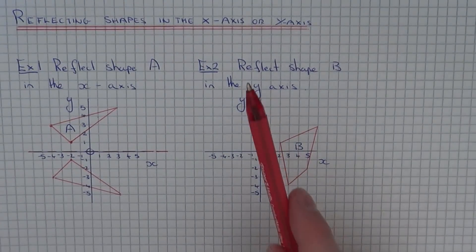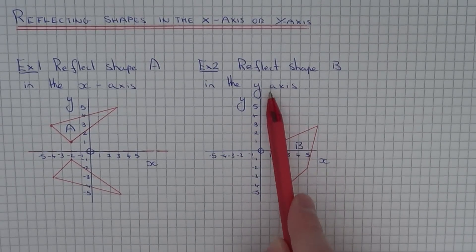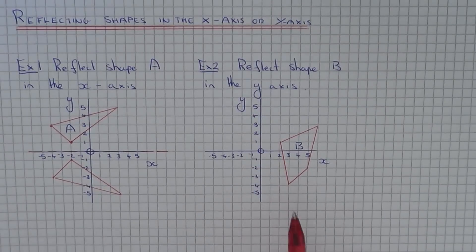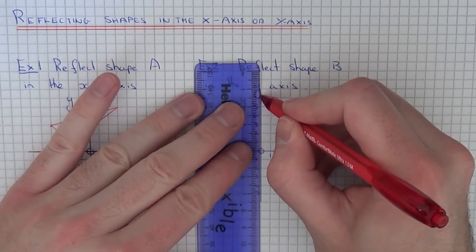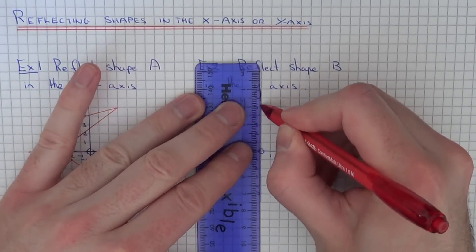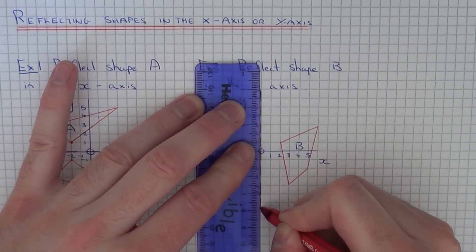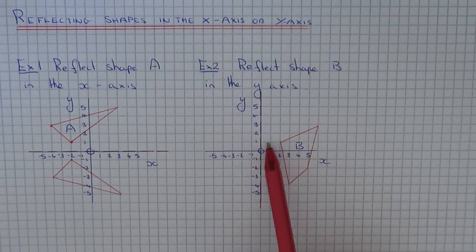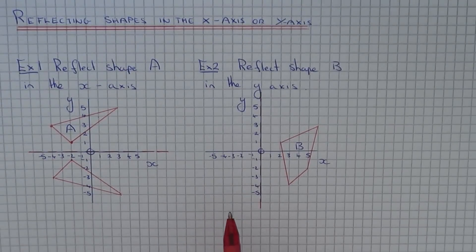So let's move on to example two. This time we need to reflect shape B in the y axis. This is your y axis going down here. So if we just make it clear where our mirror line is. Again, we've just got to count the distance of each corner to the mirror line, and then it's going to be the same distance on the other side.